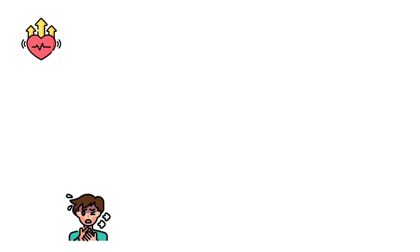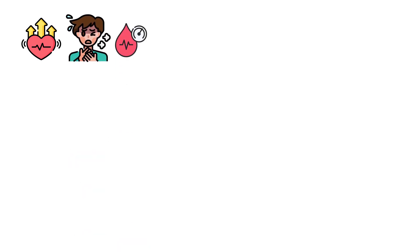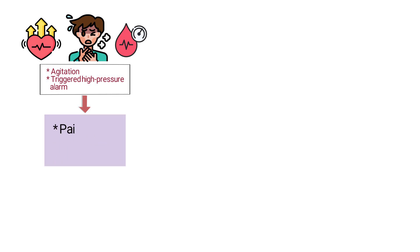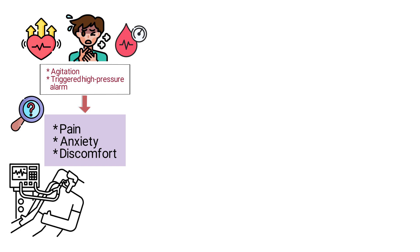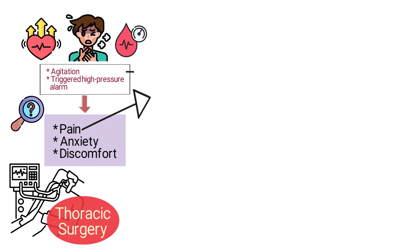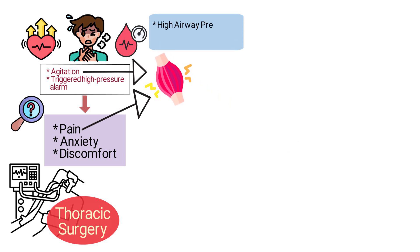Let's break it down. The patient's elevated heart rate, respiratory rate, and blood pressure, along with agitation and a triggered high pressure alarm, suggests that he is likely experiencing pain, anxiety, or discomfort. These are just a few clues that you should have noticed throughout the question. These findings are common in post-operative patients who are mechanically ventilated, particularly after major procedures like thoracic surgery.